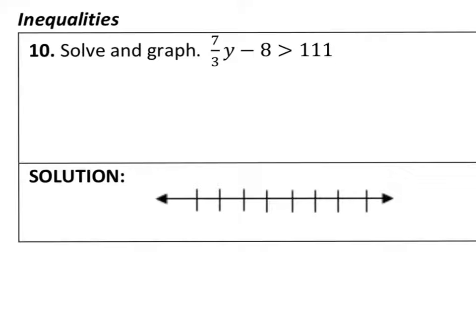So, taking a look at number 10, let's add this 8 over to both sides so we can get y by itself. So that leaves us with 7 thirds y is greater than 119.